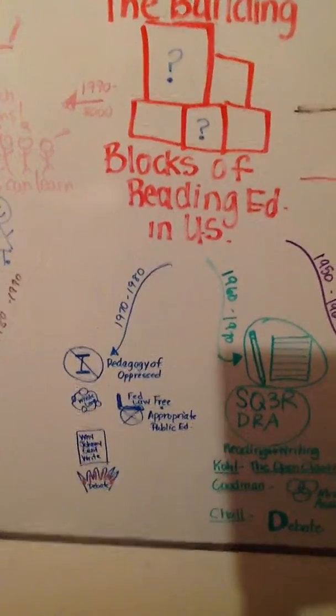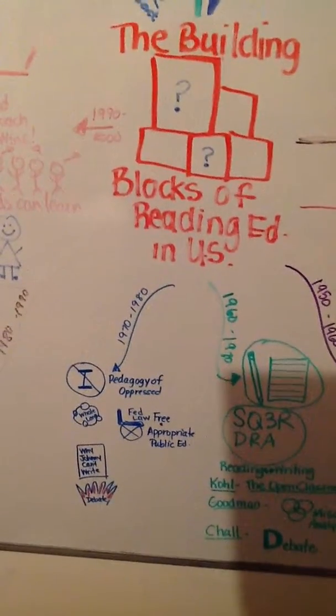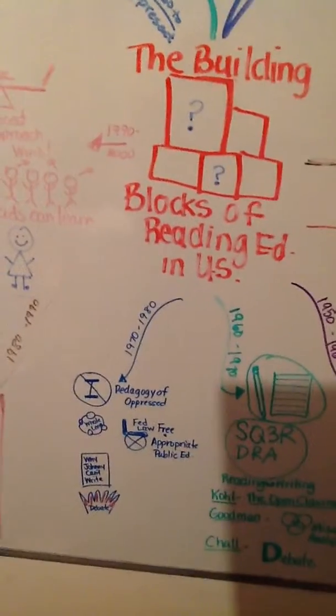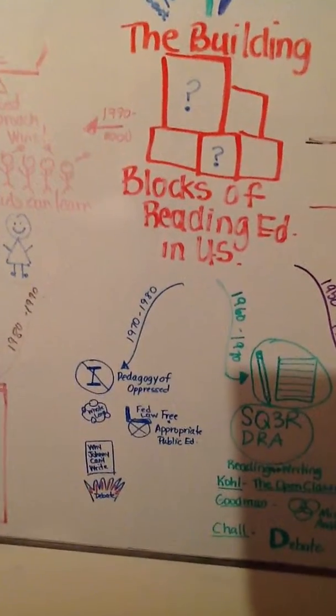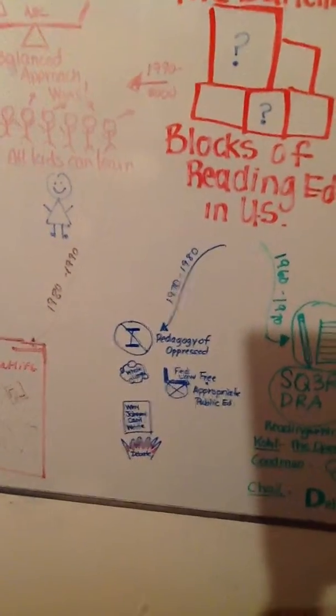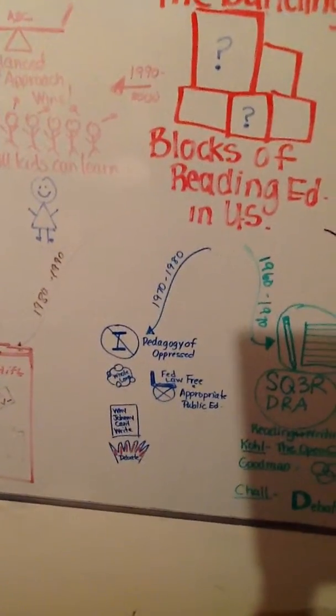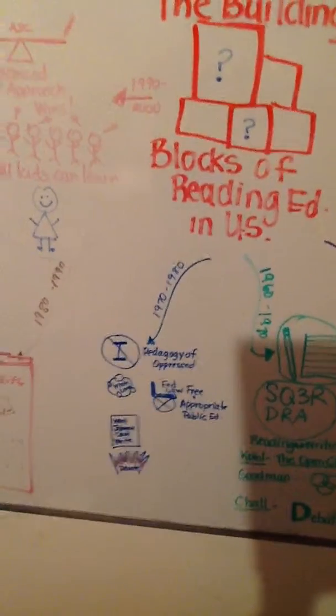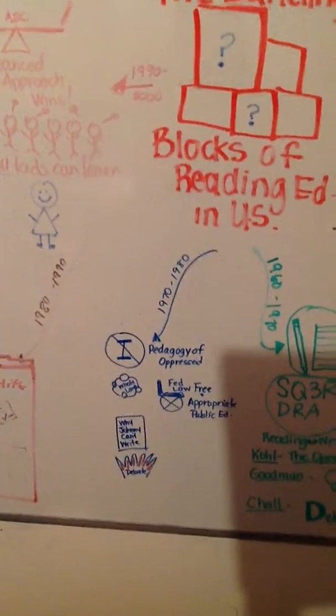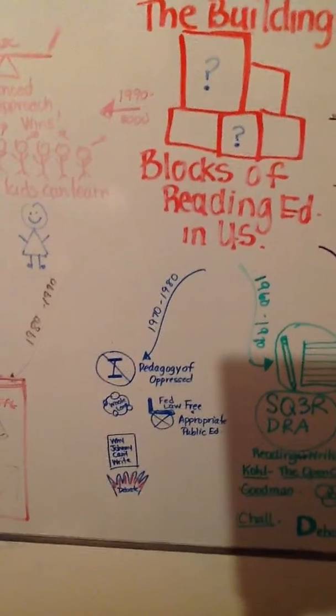Then the wheelchair is because the federal law was passed that all students, no matter what their disability, have a right to free and appropriate public education, which we know created a lot of jobs. And then the book, Why Johnny Can't Write, that comes back with the reading debate. It heats it up. So I put a little flame under there. They were finding people were struggling. So that brought the reading debate back open.